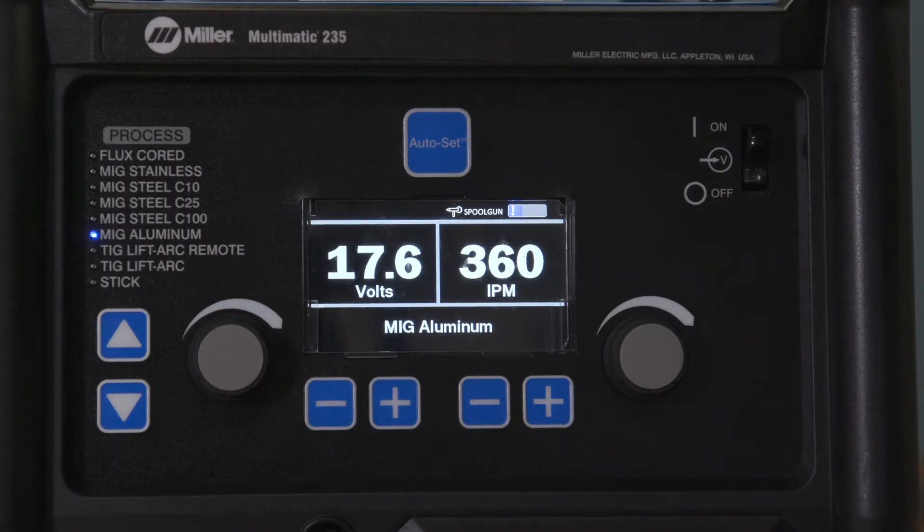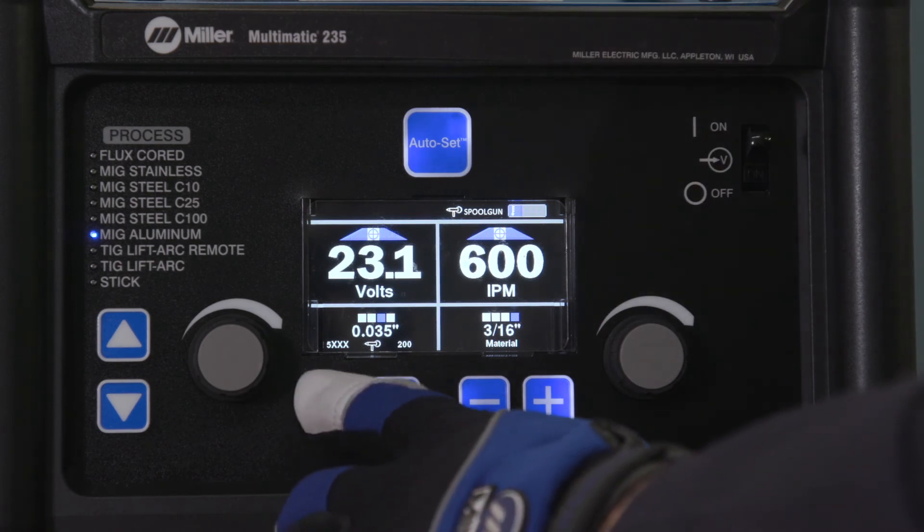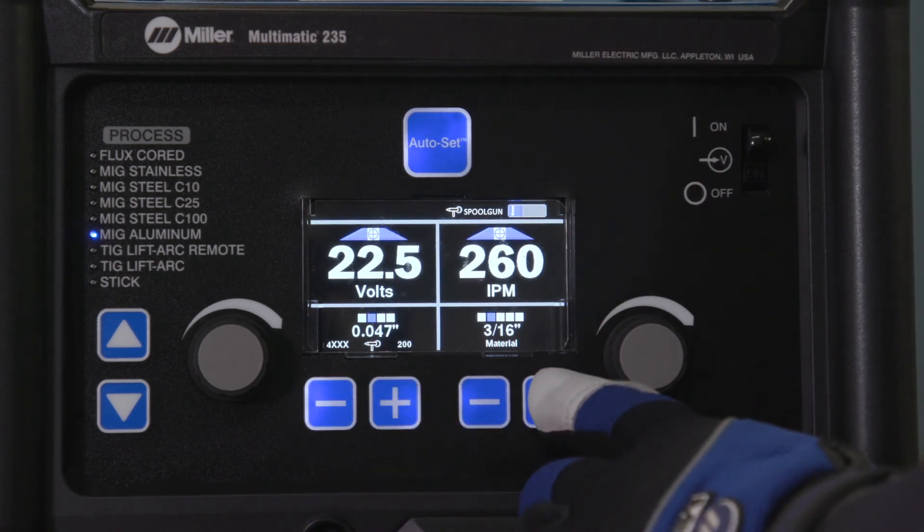Snip the wire, then close the spool gun cover. If you are using the Auto Set Elite feature, select wire type, wire diameter, and material thickness.